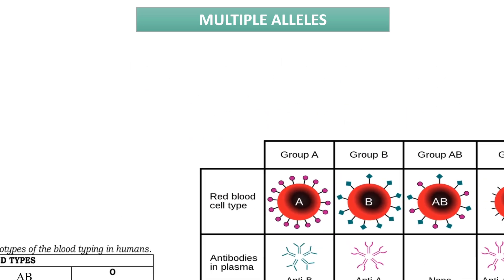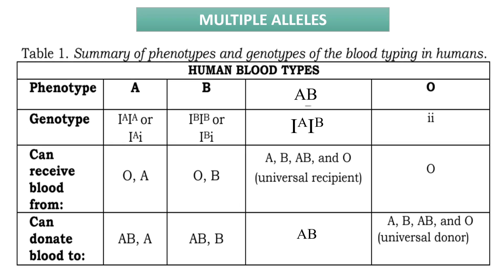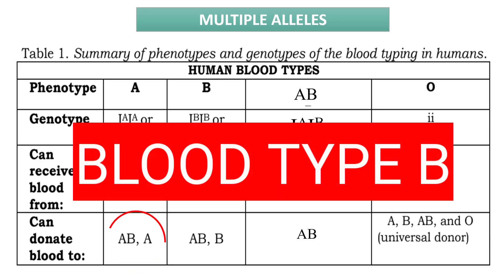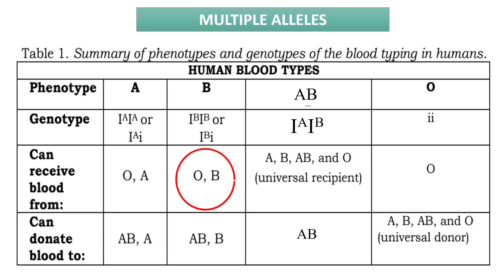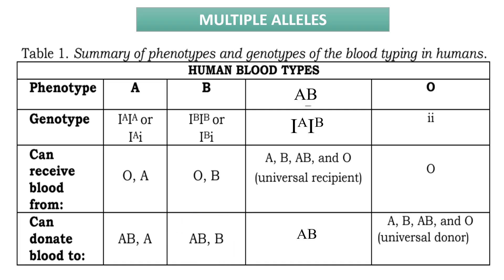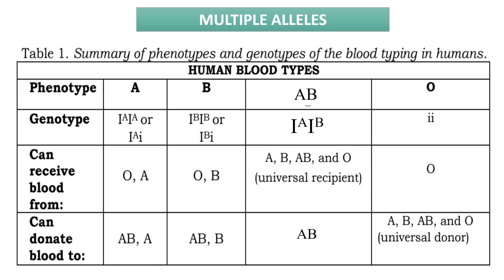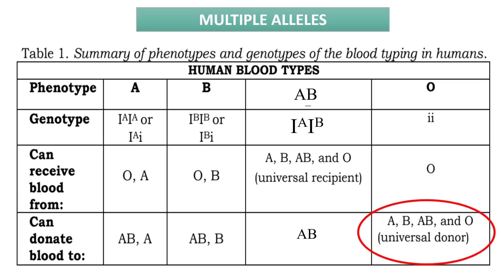Here is the summary of phenotypes and genotypes of blood typing in humans. Blood type A can receive blood from blood type O and A, and can donate blood to blood type AB and A. Blood type B can receive blood from blood type O or B, and can donate blood to blood type AB and B. Blood type AB can receive from all different blood types but can only donate to blood type AB. Blood type O can only receive from blood type O but can donate to all different blood types.